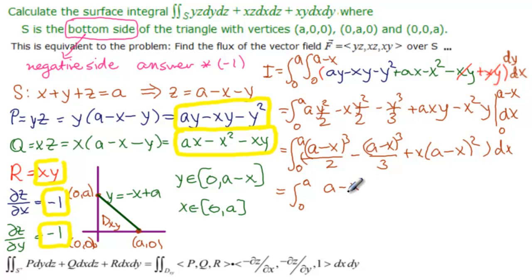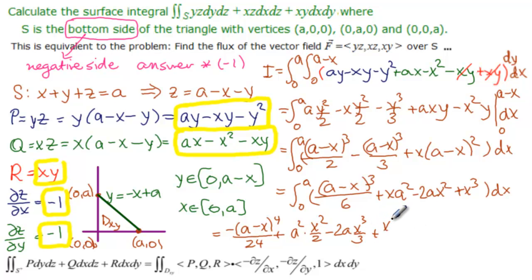So this is going to be (a minus x) squared, and this is also (a minus x) squared. That's (a minus x) cubed over 2 for this one, and then this one is (a minus x) cubed over 3. And then this, if I take the x out front, I have x times (a minus x) squared dx. That is from 0 to a. Let's make this integrable. This is (a minus x) cubed over 6. A half minus a third is a sixth. And then we'll multiply this out: x(a squared minus 2ax squared plus x cubed) dx.